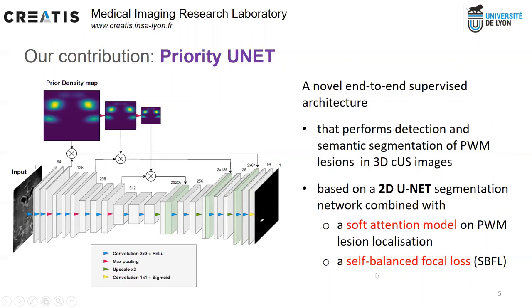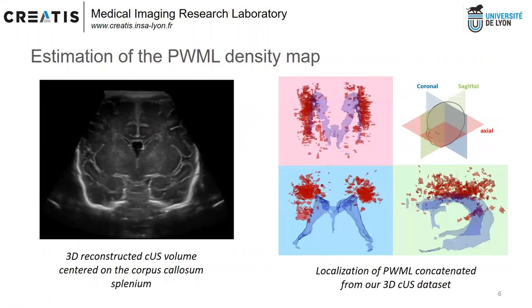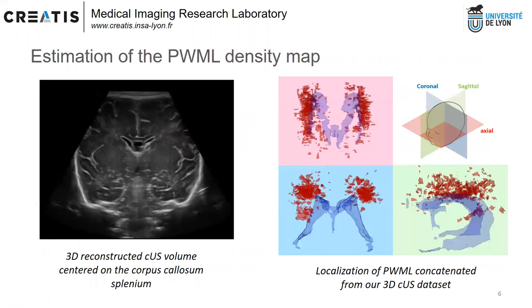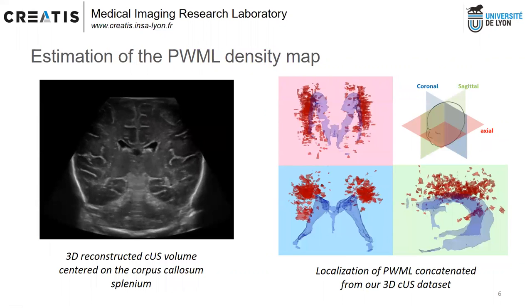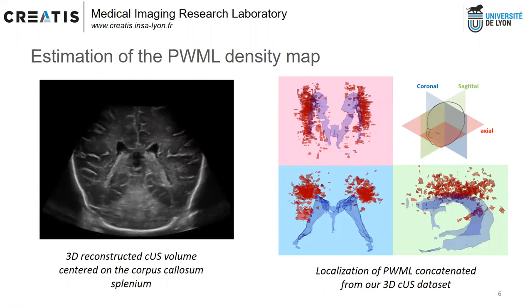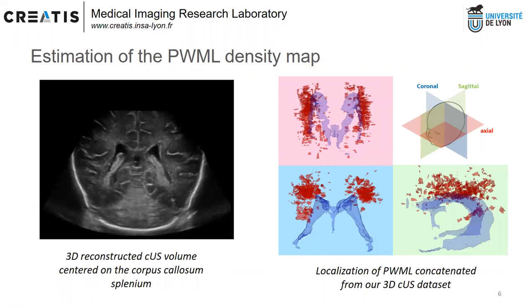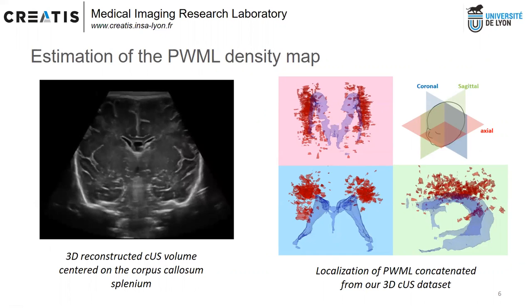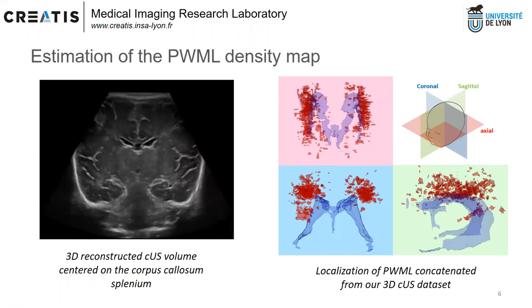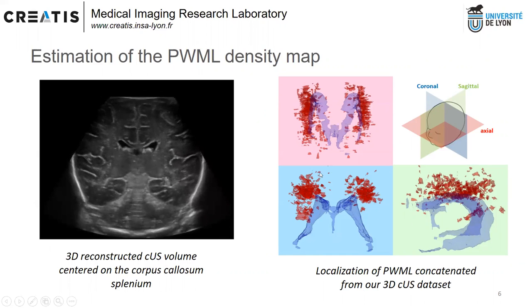We also combine the newly introduced self-balanced focal loss, SBFL, which has been proposed to tackle very unbalanced segmentation tasks. This 3D rendering view shows in red the pooled lesions of our 3D volume, indicating that they are mainly located around the ventricular system, represented in blue.